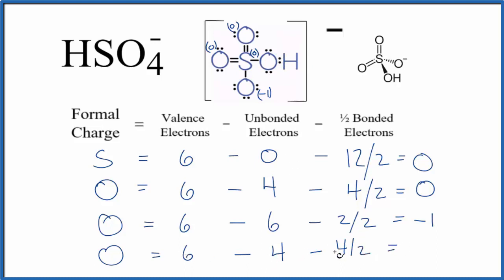Six minus four is two minus two—that gives us zero. So this oxygen has a formal charge of zero, and hydrogen with a single bond will have a formal charge of zero as well.